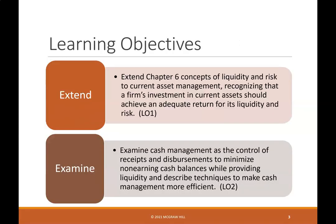Learning Objectives: Extend Chapter 6 concepts of liquidity and risk to current asset management, recognizing that a firm's investment in current assets should achieve an adequate return for its liquidity and risk. Examine cash management as the control of receipts and disbursements to minimize non-earning cash balances while providing liquidity, and describe techniques to make cash management more efficient.